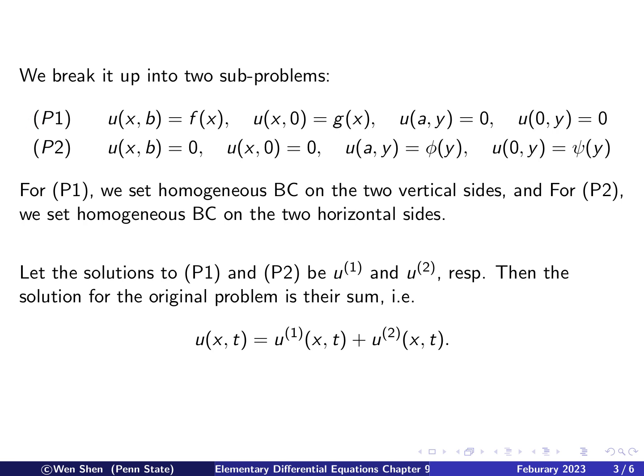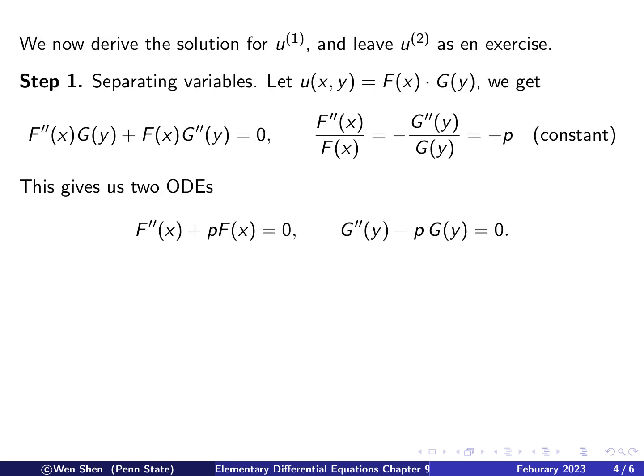And then the remaining idea is the same. For problem 1 and problem 2, we have found the solution, we call it u1 and u2. Then the solution for the original problem with the four sides non-homogeneous Dirichlet boundary condition will be just the sum of these two. So u will just be u1 plus u2. In the previous video, we would have four of them. Now it's just a bit simplified, and we have two.